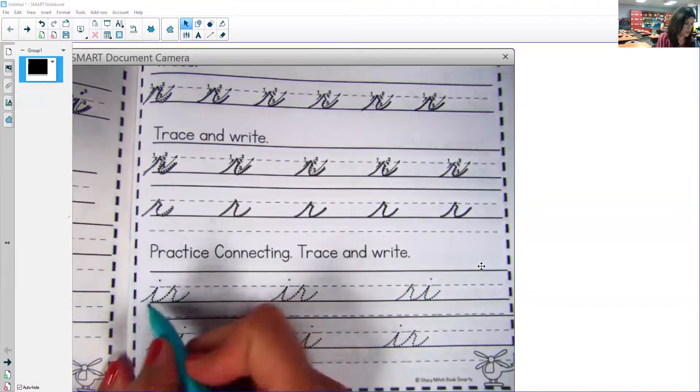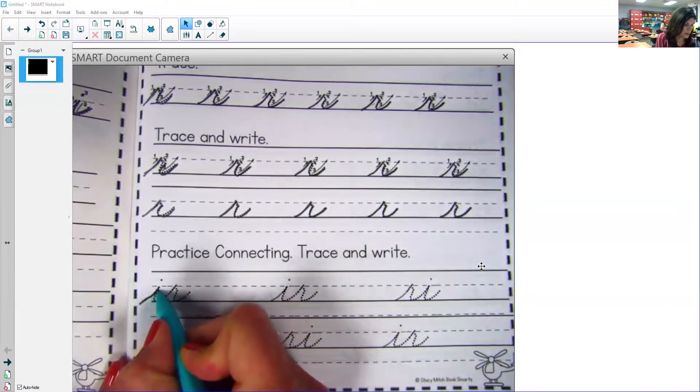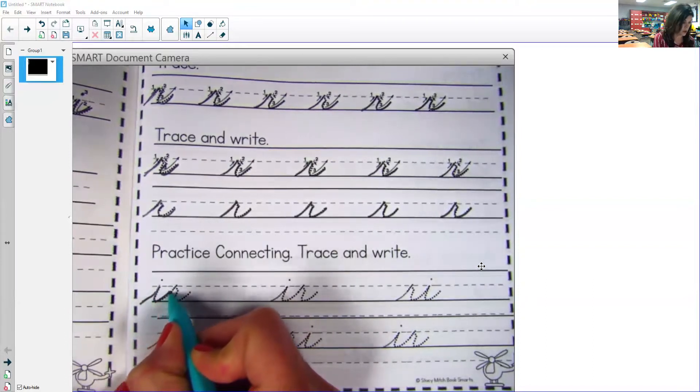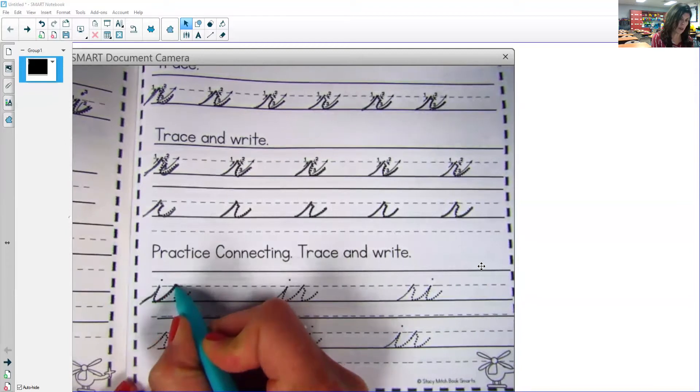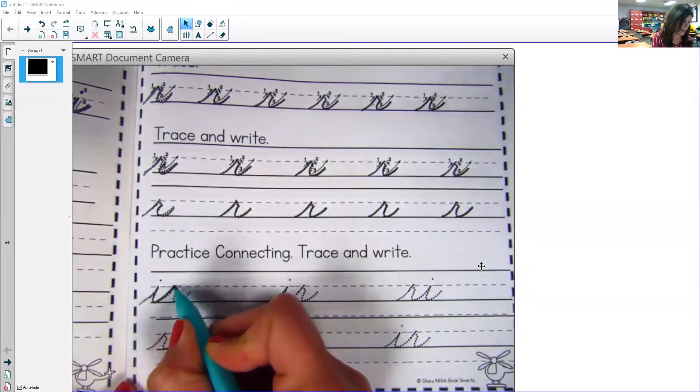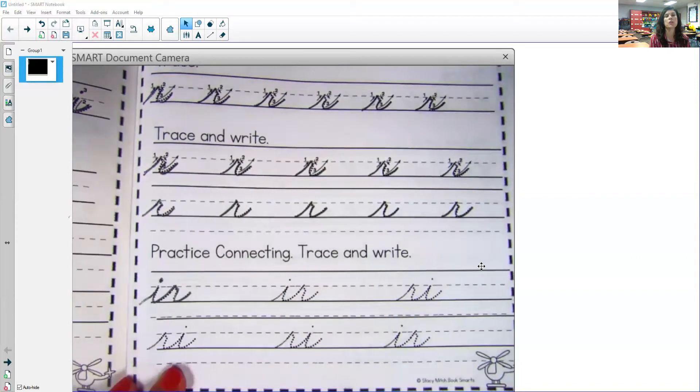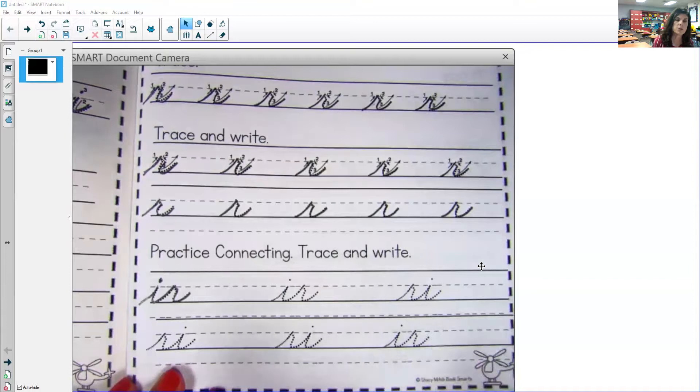Okay, so start on the baseline, come up, touch the middle line, come down, scoop up into your R. Touch that middle line, slant down, come down and scoop up, and then go back and dot your I. Okay, so remember, you do not pick up your pencil when you are writing cursive. Finish both of your letters, and then you will go back and dot your I.